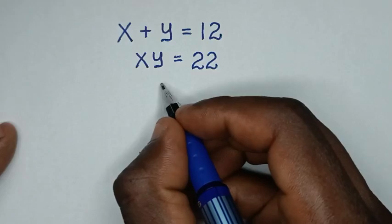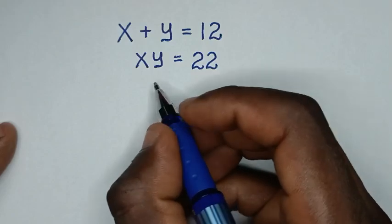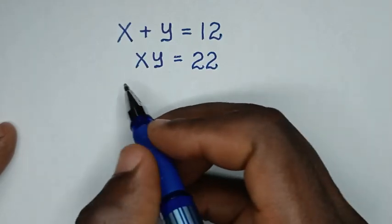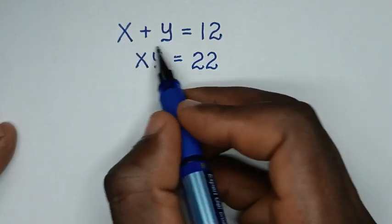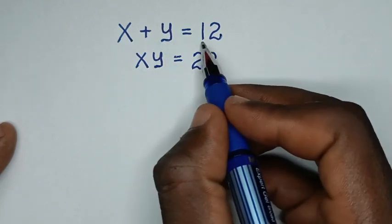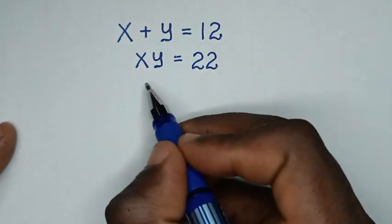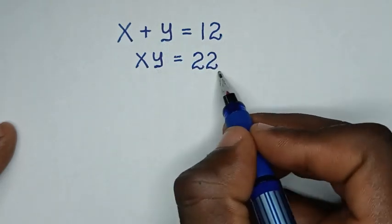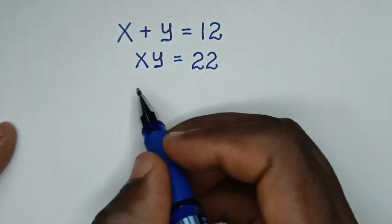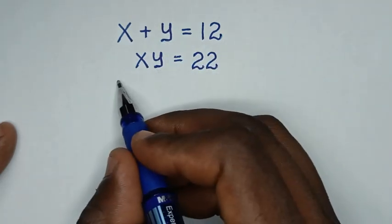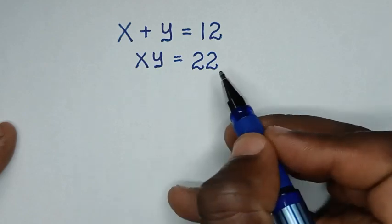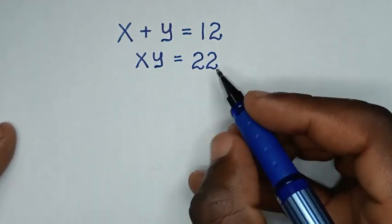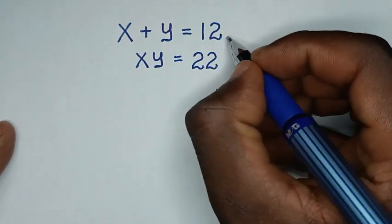Hello, you are welcome to solve this math problem of x plus y is equal to 12, x times y is equal to 22, to find the values of x and y from these two systems of equations.